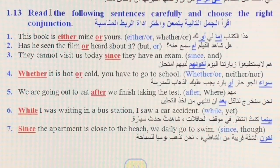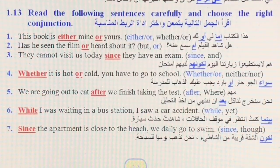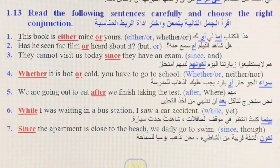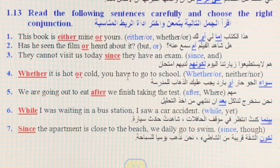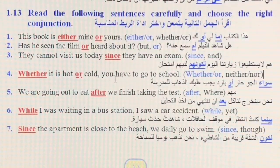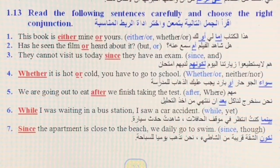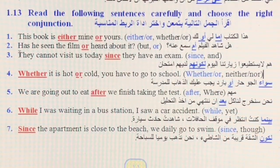التمرين الآخر: read the following sentences carefully and choose the right conjunction. موضوعنا النقطة الرابعة: فراغ it is hot فراغ cold, we have to go to school. أعطانا اختيارات: whether or — سواء أو — أو neither nor — لا ولا. حسب المعنى: سواء الجو حار أو بارد we have to go to school، فنختار whether or.